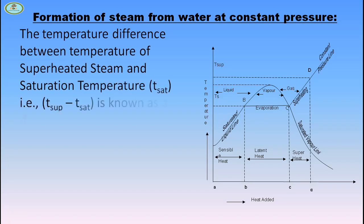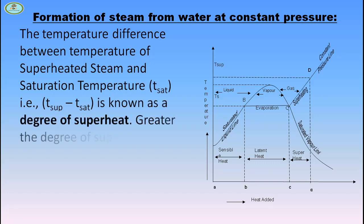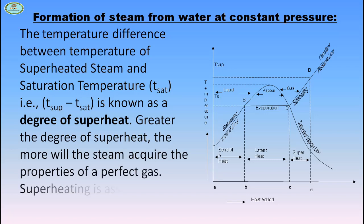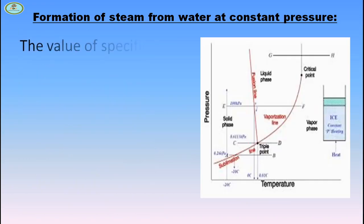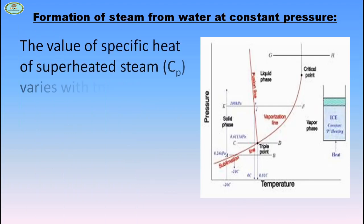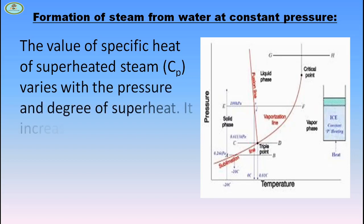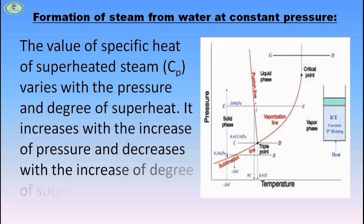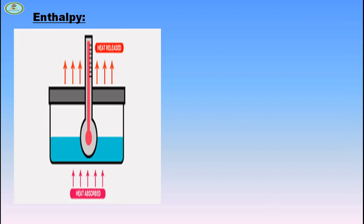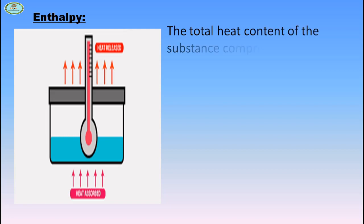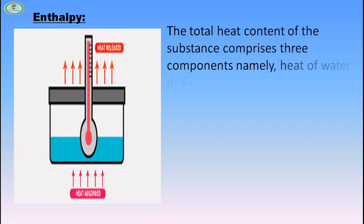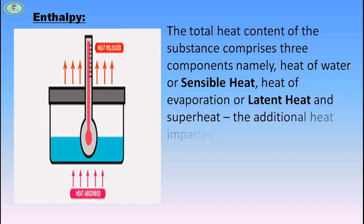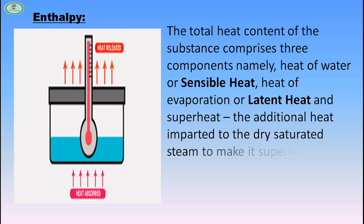The temperature difference between the temperature of superheated steam and the saturation temperature is known as the degree of superheat. The greater the degree of superheat, the more will the steam acquire the properties of a perfect gas. Superheating is assumed to take place at constant pressure. The value of specific heat of superheated steam varies with the pressure and degree of superheat. The total heat content of the substance comprises three components: heat of water (sensible heat), heat of evaporation (latent heat), and superheat. The additional heat imparted to dry saturated steam to make it superheated is called superheat.